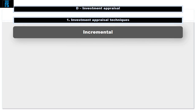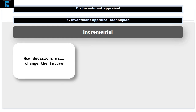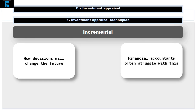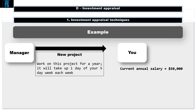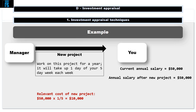Next, let's consider the significance of the word 'incremental.' We're only interested in understanding how a decision will change the future. Financial accountants often struggle with this concept. For example, if you are paid fifty thousand dollars a year and your manager says to you, 'I need you to work on this project for a year, it will take up one day of your five-day week each week.' When you're considering the relevant cost of your time, it's very tempting to say fifty thousand dollars divided by five equals ten thousand dollars, so ten thousand dollars is the relevant cost of my time on this project. However, in actual fact, you were paid fifty thousand dollars before, and you continue to be paid fifty thousand dollars. So the incremental cost of your time is zero.